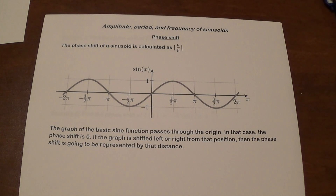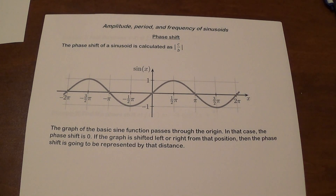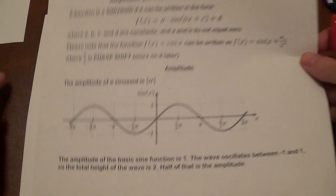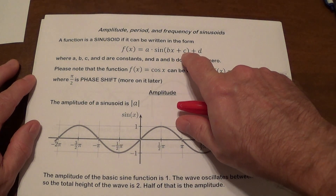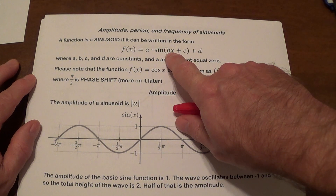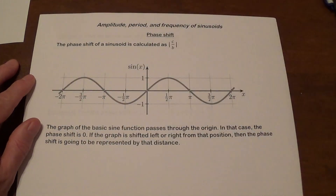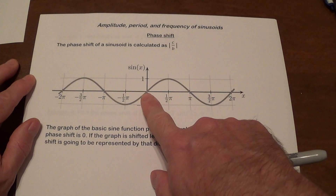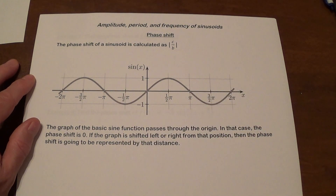A brief introduction to phase shift: in the equation a sine of bx plus c plus d, the phase shift is found by taking c divided by b. For this current graph, the phase shift is zero. But if you start moving the graph left or right, you get what's called a phase shift — a term coming from electrical engineering.